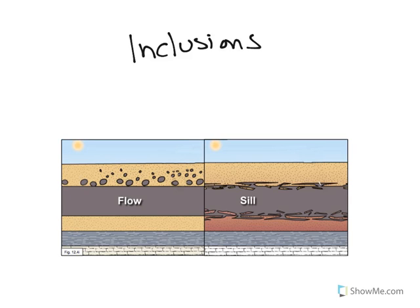I want to take a moment and talk about the principle of inclusions — mainly the differences between the picture on the left and the picture on the right. The principle is relatively easy to understand: when you have a rock layer cut across another, like a dike, a sill, or as you see in the left picture, a lava flow, it's going to incorporate bits and pieces of the rocks below it. That's the principle of inclusions.